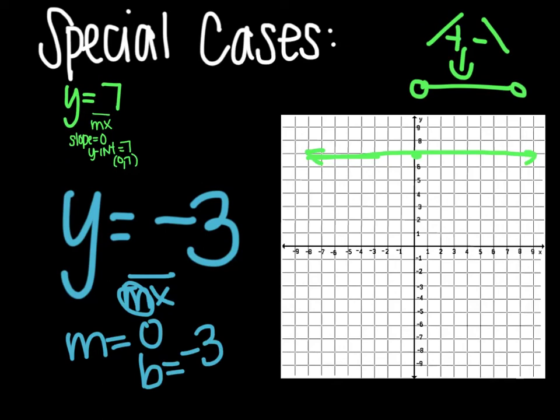That means we're starting at 0, negative 3. And then we're going to also have a horizontal line going through that point intersecting the y-axis at negative 3.